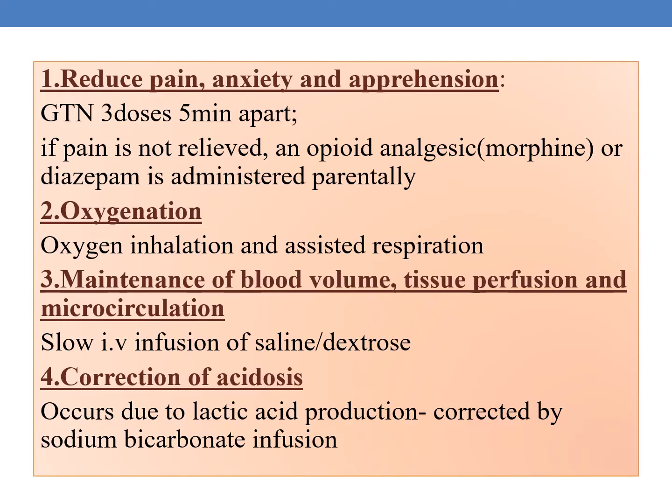To reduce pain, anxiety, and apprehension, glyceryl trinitrate (GTN) — three doses, five minutes apart — is given. If pain is not relieved, an opioid analgesic such as morphine or diazepam is administered parenterally. To increase oxygenation, oxygen inhalation and assisted respiration are given.